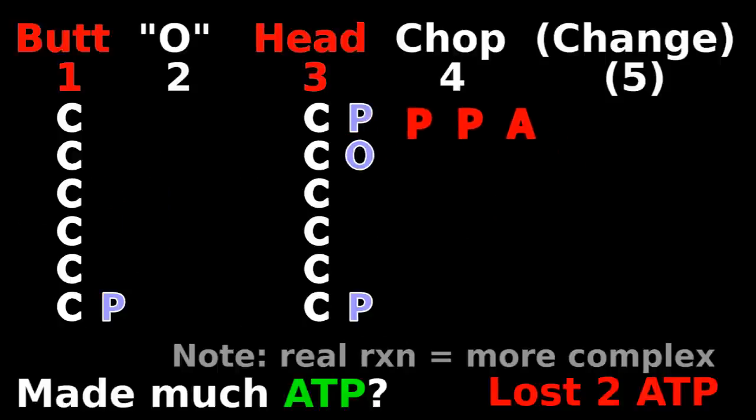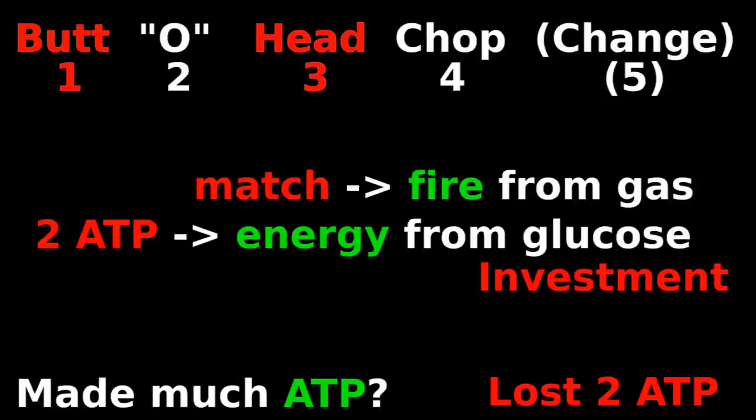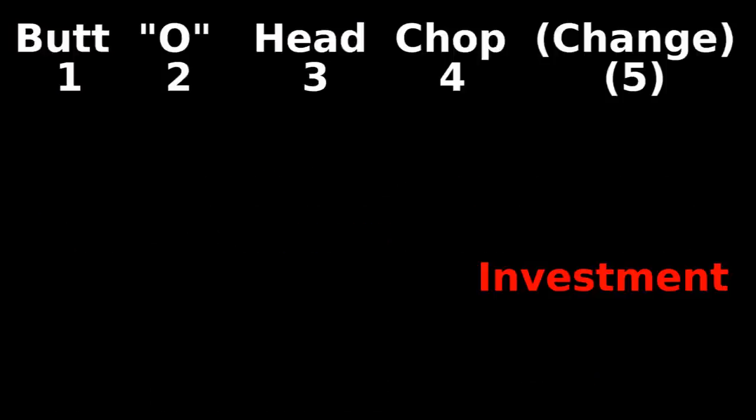That's where the phosphate on the butt and head came from. This is the investment part of glycolysis. Just like you need a match to release more fire from gasoline, you need to invest 2 ATP to release more energy from glucose.